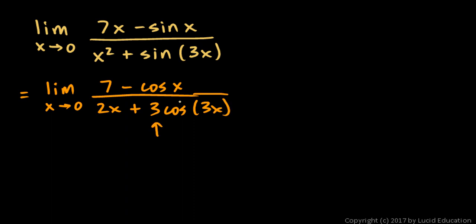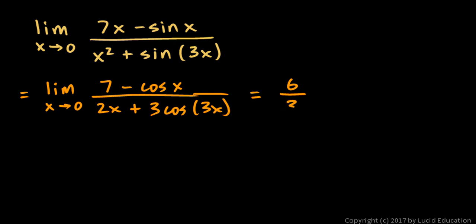That 3 appears because of the chain rule. This expression can be evaluated at x equals 0. The cosine of 0 is 1, so the numerator is 7 minus 1, which is just 6. And if x is 0, the 2x goes away, and we're left with cosine of 0, which is 1, times 3. So 6 over 3, and that simplifies to 2.